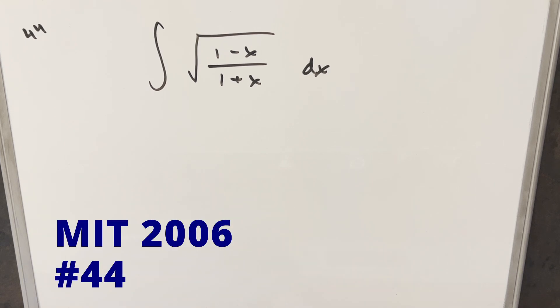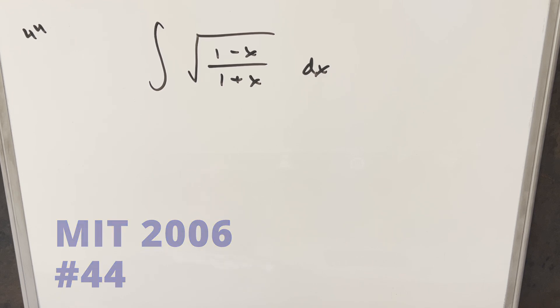Today we work a quick integral from the MIT Integration Bee 2006, problem 44. We've got the integral of the square root of (1 minus x) over (1 plus x) dx.